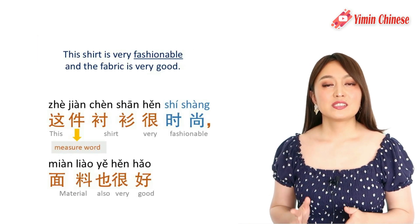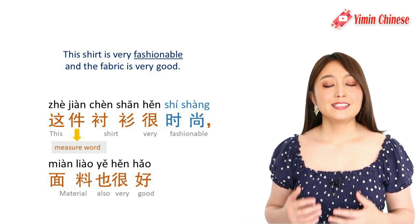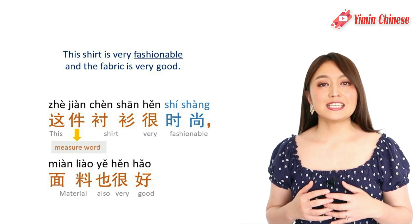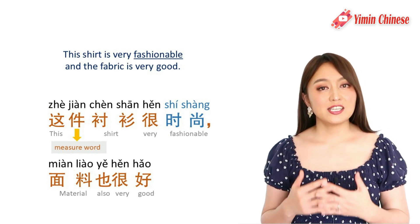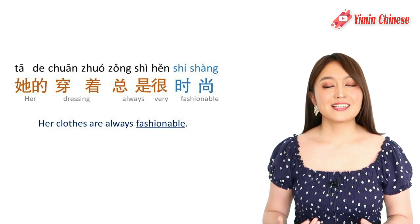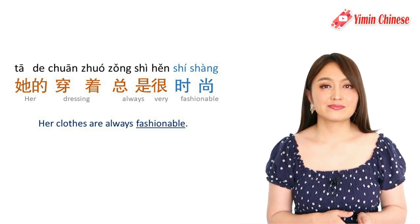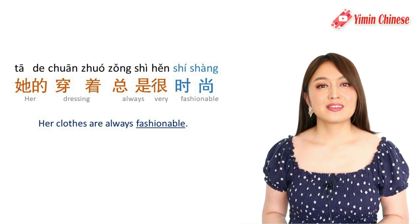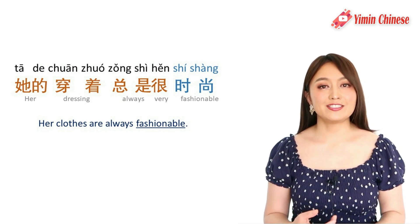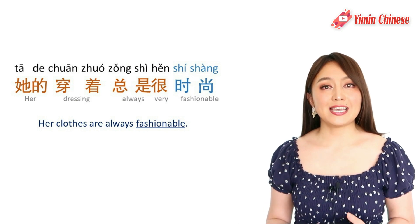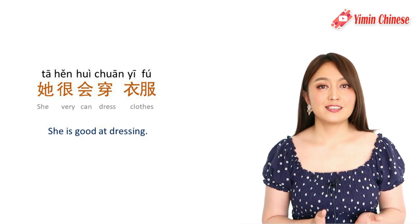Next word is fashionable — 时尚. For example: 这件衬衫很时尚，面料也很好 — This shirt is very fashionable and the fabric is very good. Another example: 她的穿着总是很时尚 — Her clothes are always fashionable. 穿着 means dress or the way someone dresses.